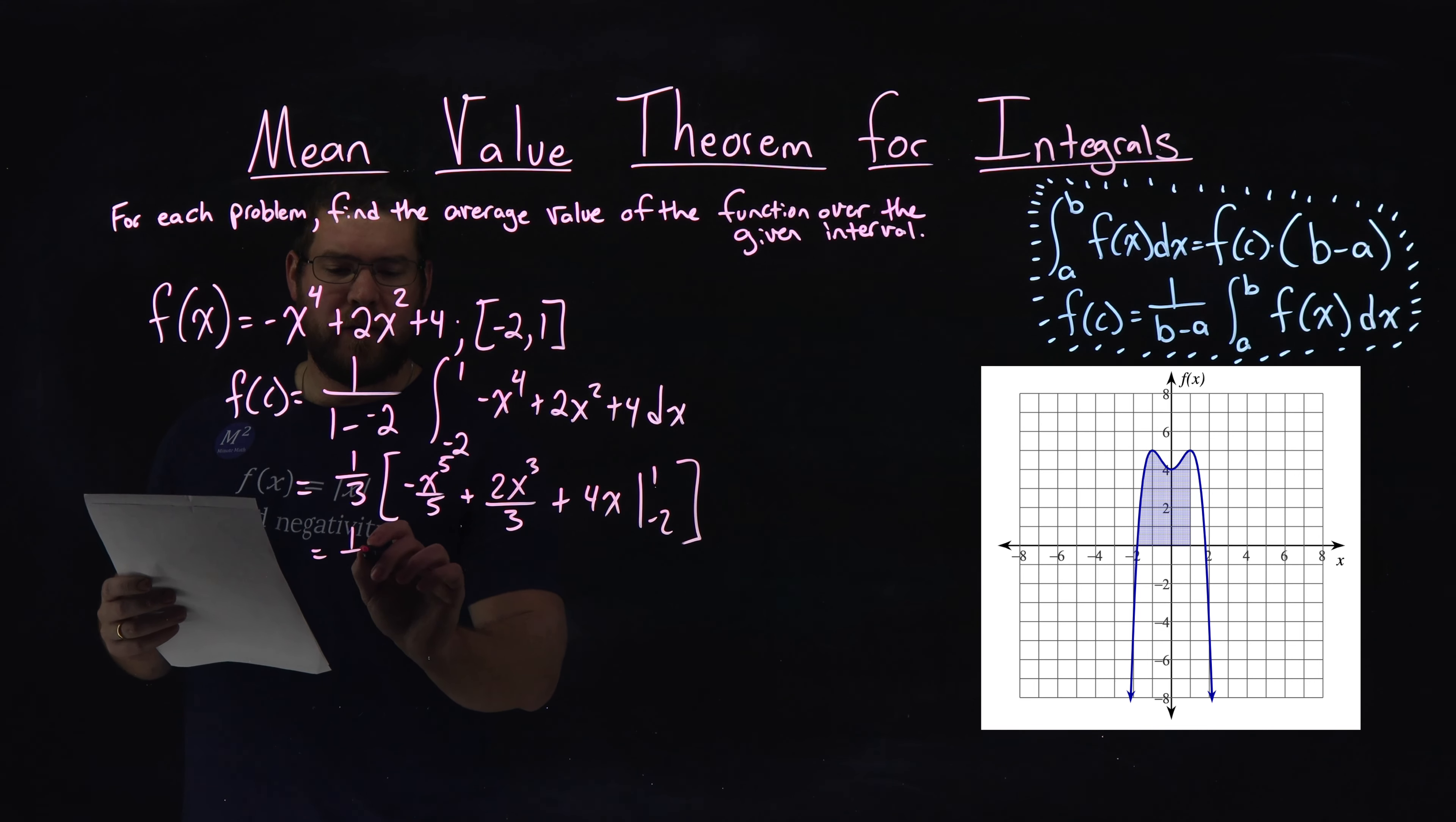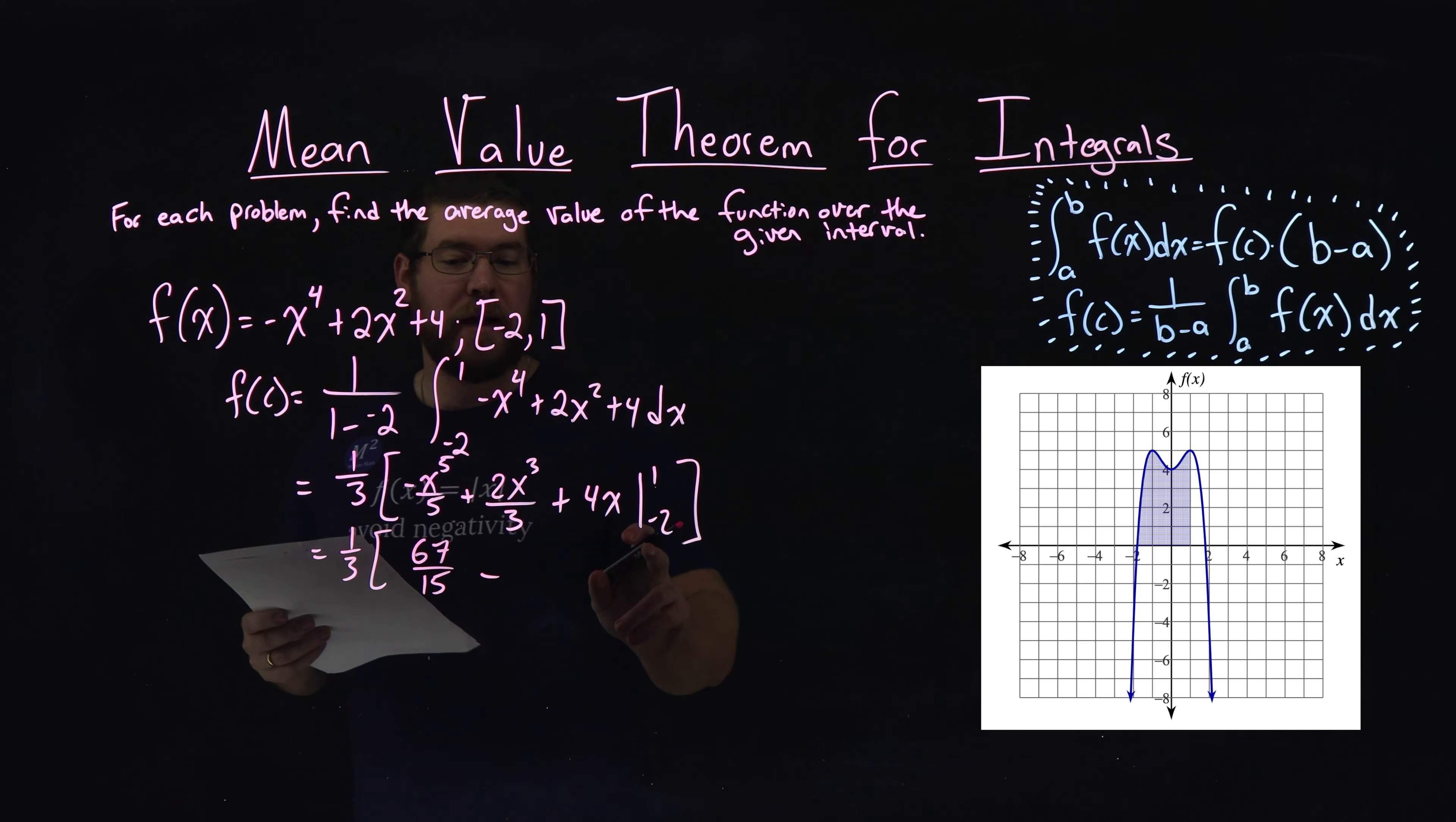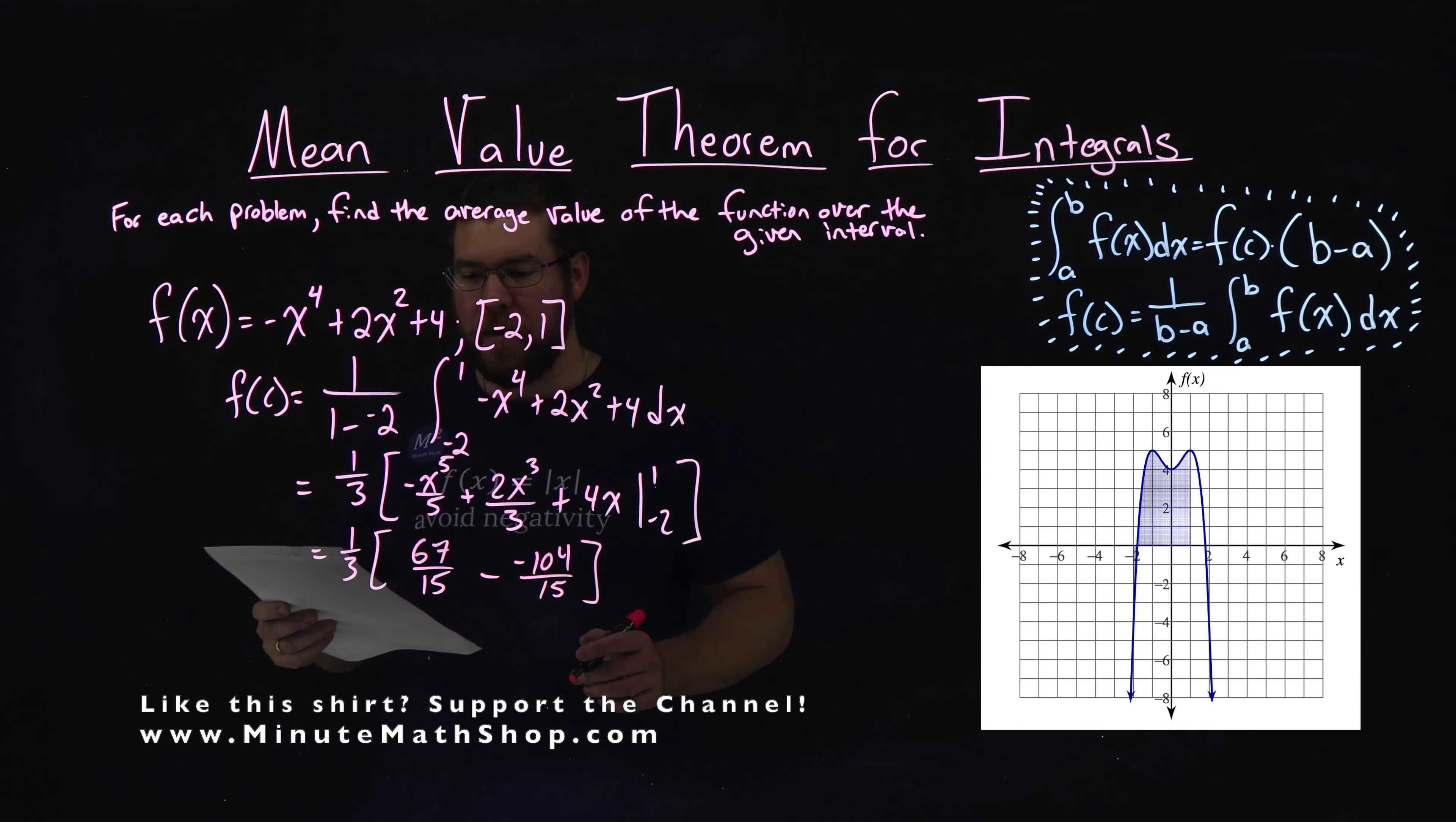So I keep plugging it in, we have 1 third out front. We now plug 1 in for x, and when I plug 1 in for x in my integral, I get - I'll do the work for you - 67 over 15. We subtract when we plug negative 2 in for x, and we get negative 104 over 15.